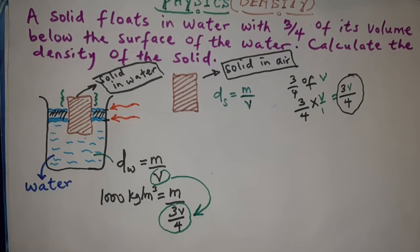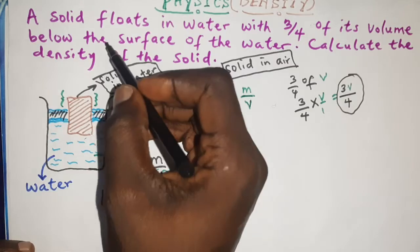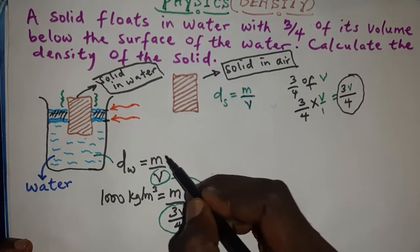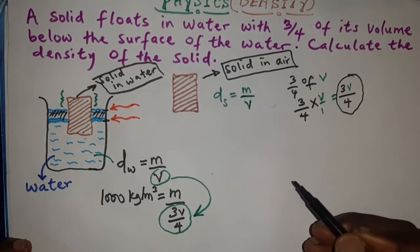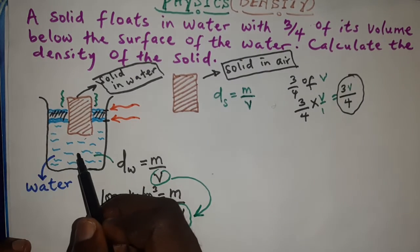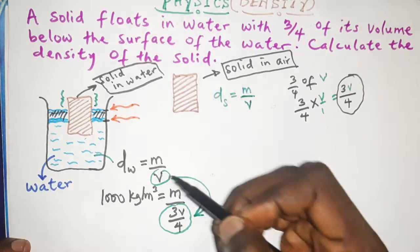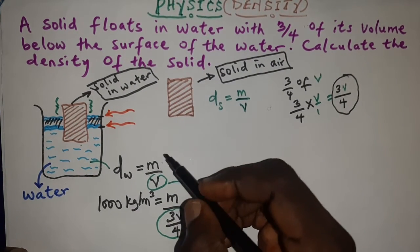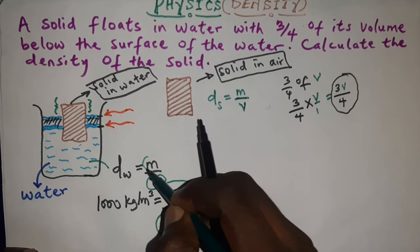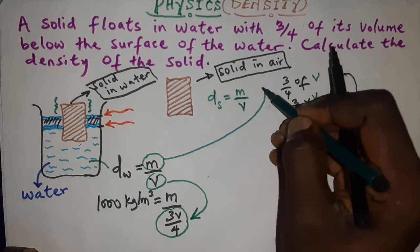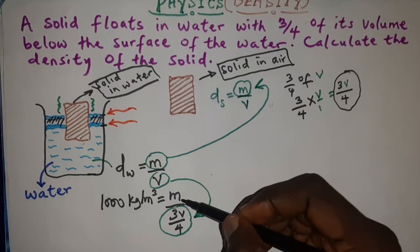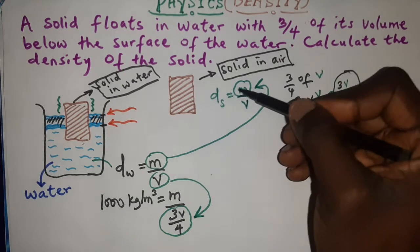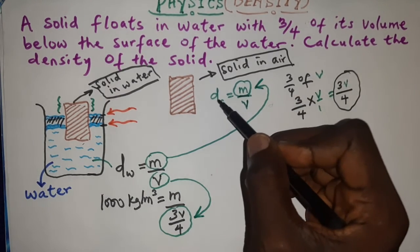Since the solid floats, the mass of the liquid displaced is equal to the mass of the overall solid. According to Archimedes' principle, a solid that floats displaces its own weight. So the mass of the liquid displaced and the mass of the overall solid are the same. I'll make this mass the subject of the formula and substitute it into the density-of-solid equation.